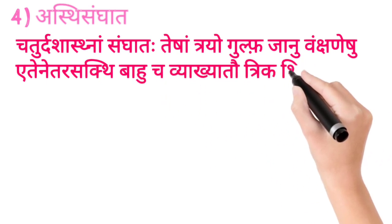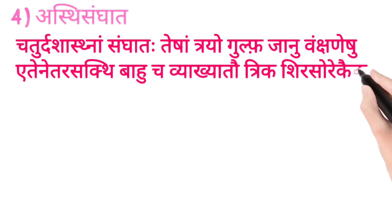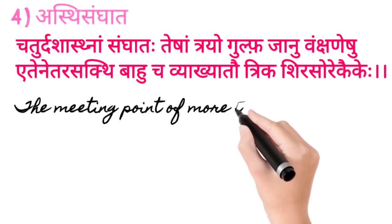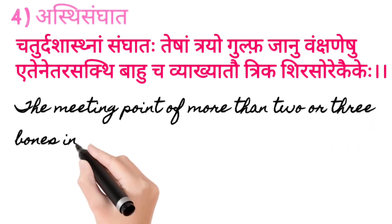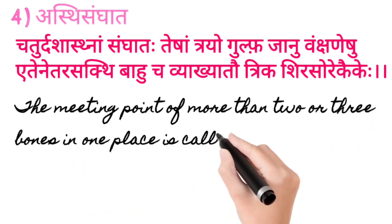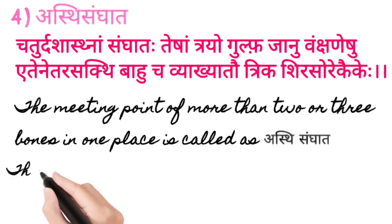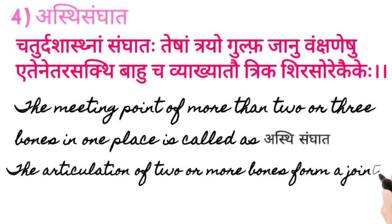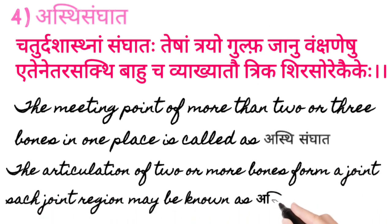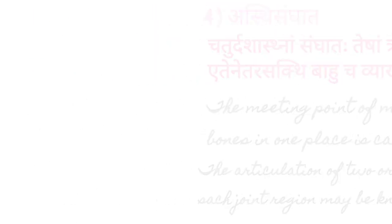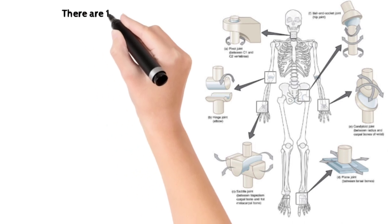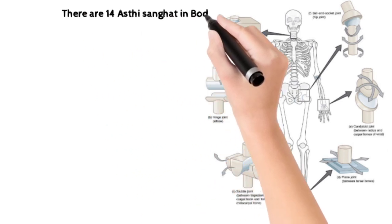The meeting point of more than two or three bones in one place is called Asthi Sangat. The articulation of two or more bones which form a joint, such joint region may be known as Asthi Sangat. Ye 14 hote hain hamari puri body mein paye jaate hain. They are nothing but the joints of the body. Here I am attaching a picture. There are 14 Asthi Sangat in the body.